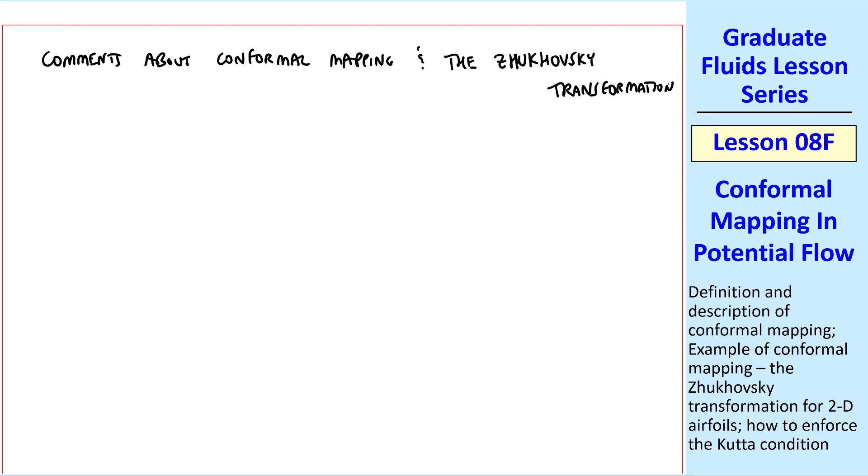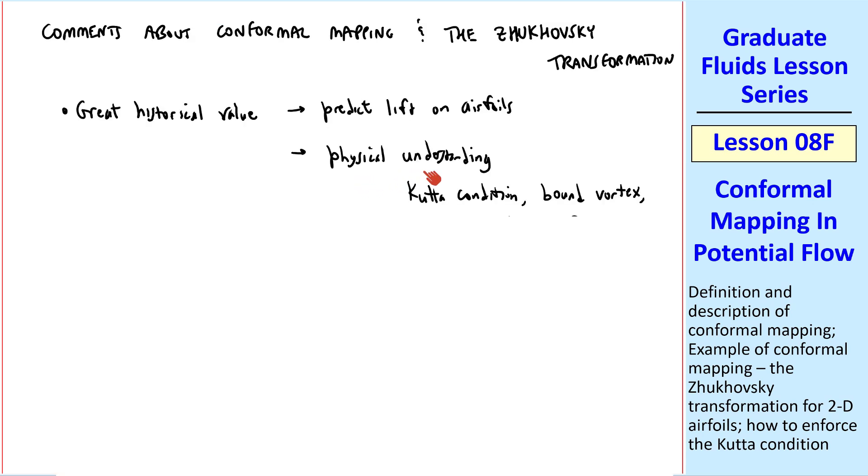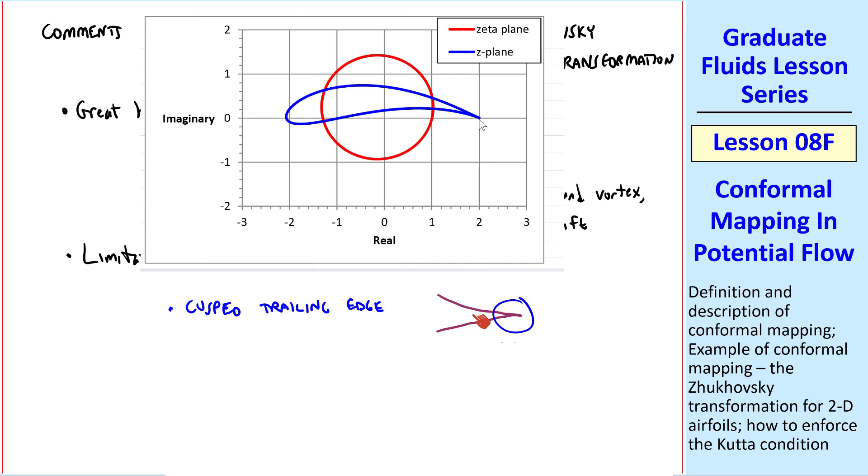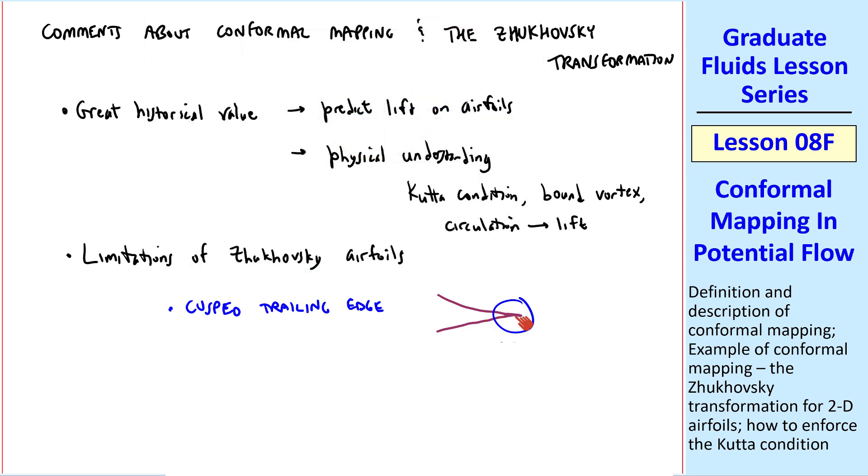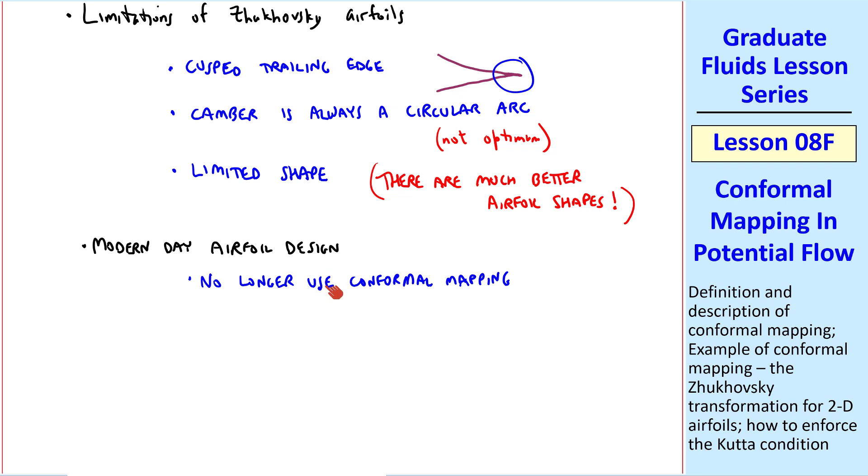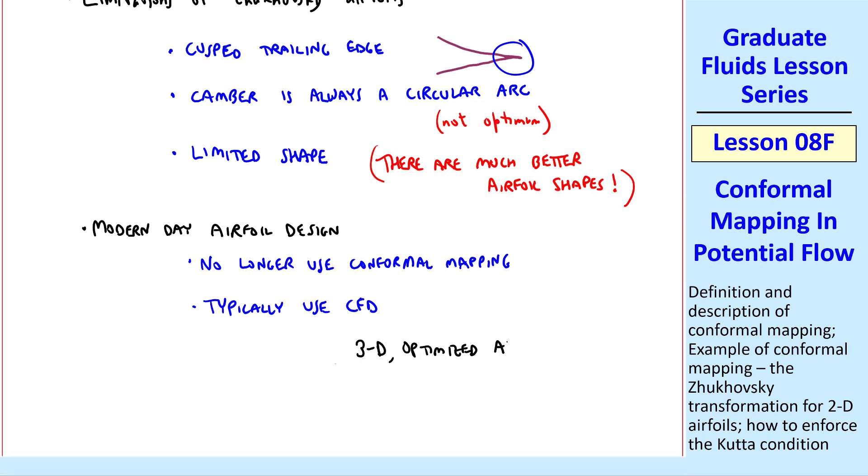In closing, I'll make a few comments about conformal mapping and the Joukowsky transformation. This is of great historical value. People were able to predict the lift on airfoils, and it actually works quite well. It increases our physical understanding of things such as the Kutta condition, bound vortex, and how circulation generates lift. But there are limitations. Joukowsky airfoils always have a cusped trailing edge. I didn't draw it like this in my previous drawings, but it has a cusp. This is very hard to manufacture, and you would get some severe vibrations with a cusp. Camber is always a circular arc, which is not optimum for airfoil design. All the Joukowsky airfoils have the same kind of shape. There's kind of a family of Joukowsky airfoils. But there are much better airfoil shapes out there. Finally, modern day airfoil design no longer uses conformal mapping. Instead, typically, we just put it on a CFD code. We can then generate fully 3D optimized airfoil shapes.